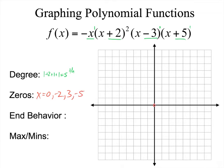Let's put those zeros down. There's 0, negative 2, 3, and negative 5. Those are my five zeros for my fifth-degree polynomial.